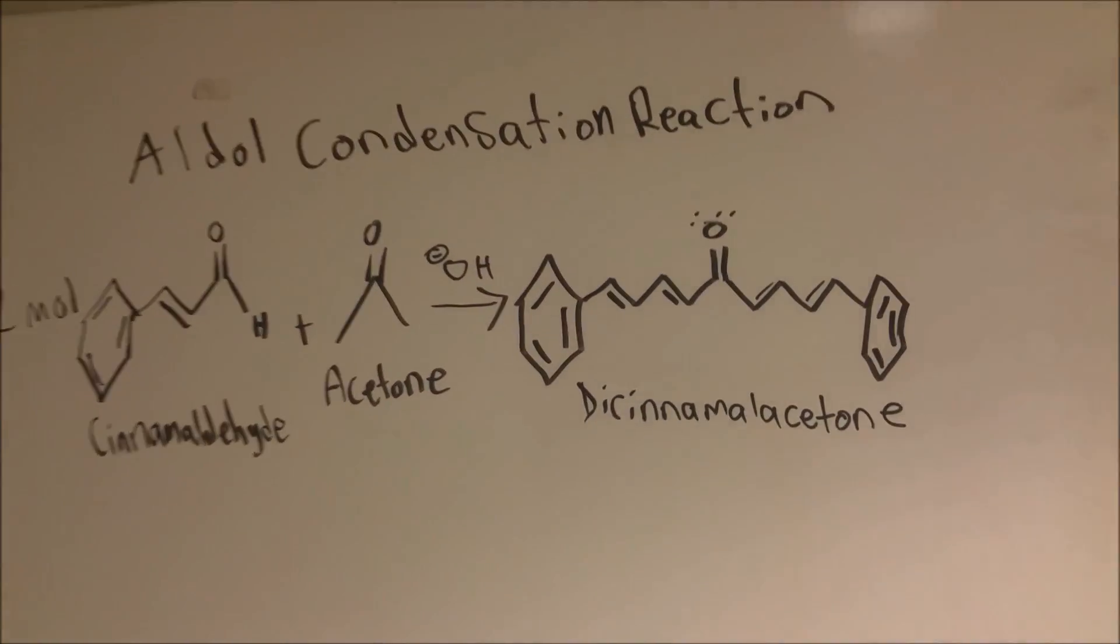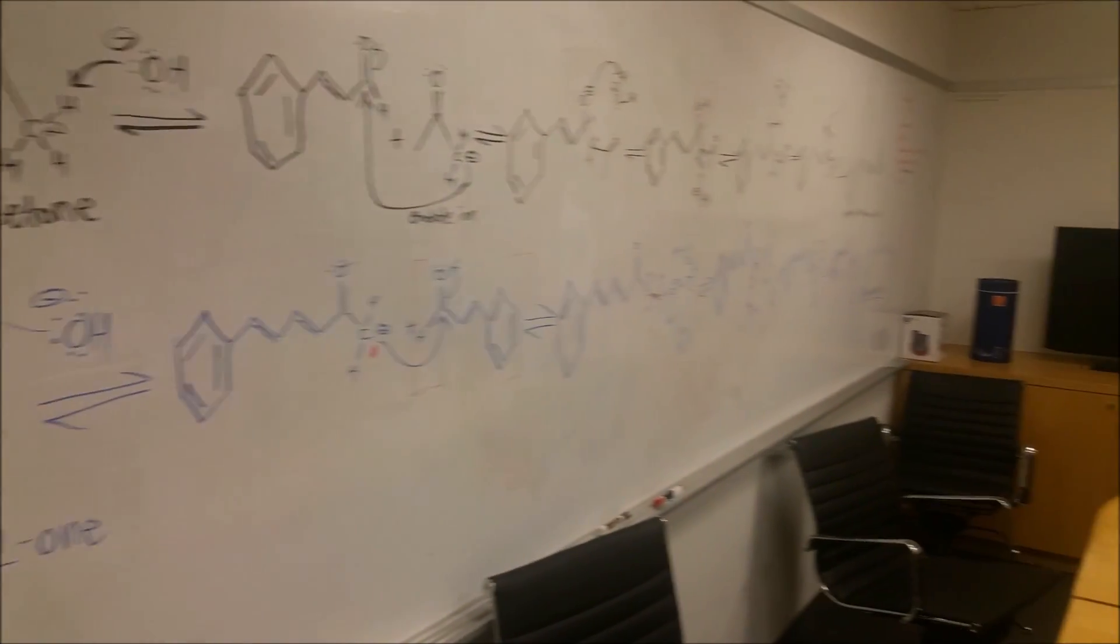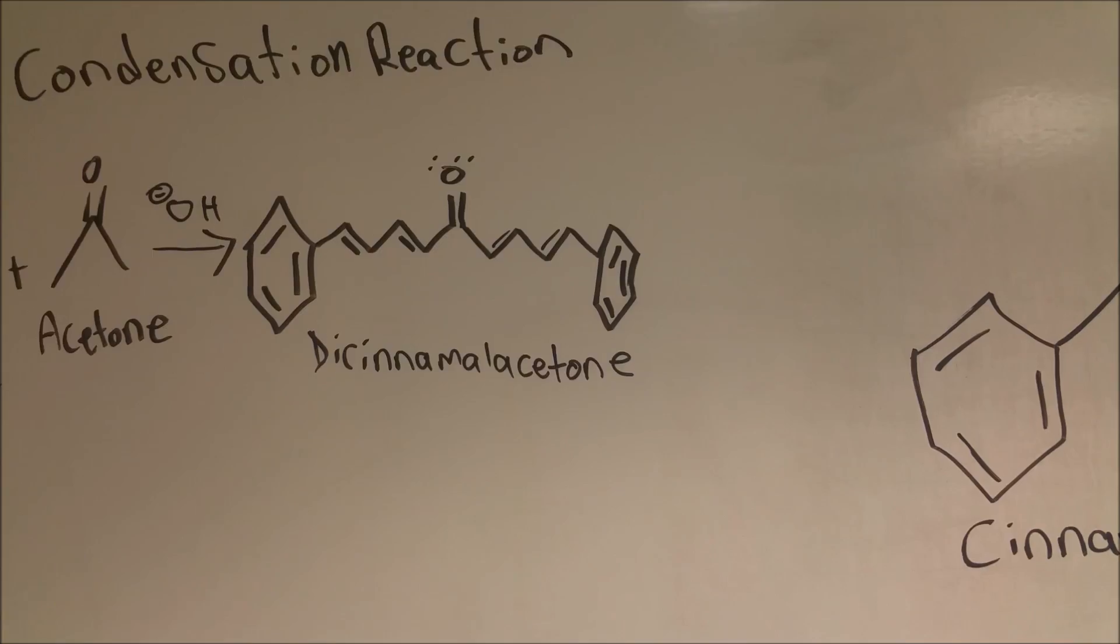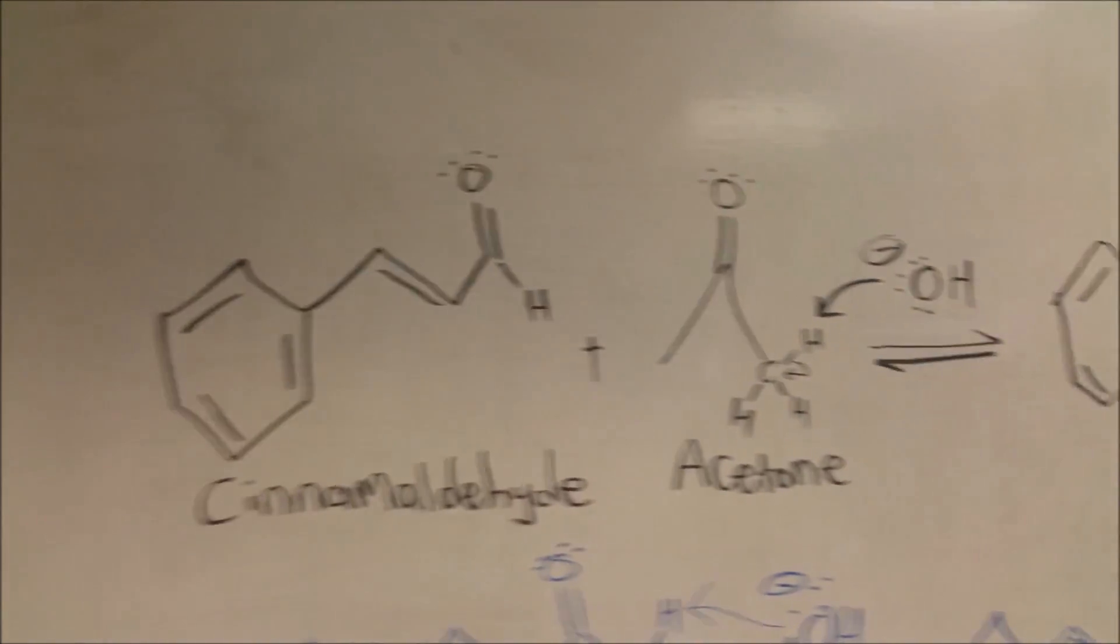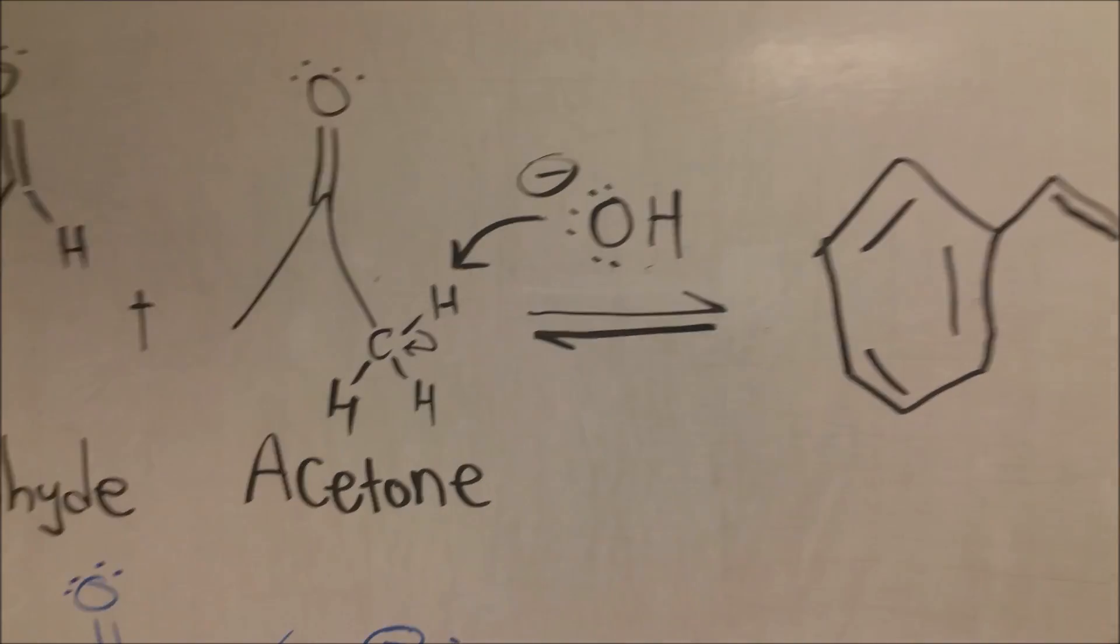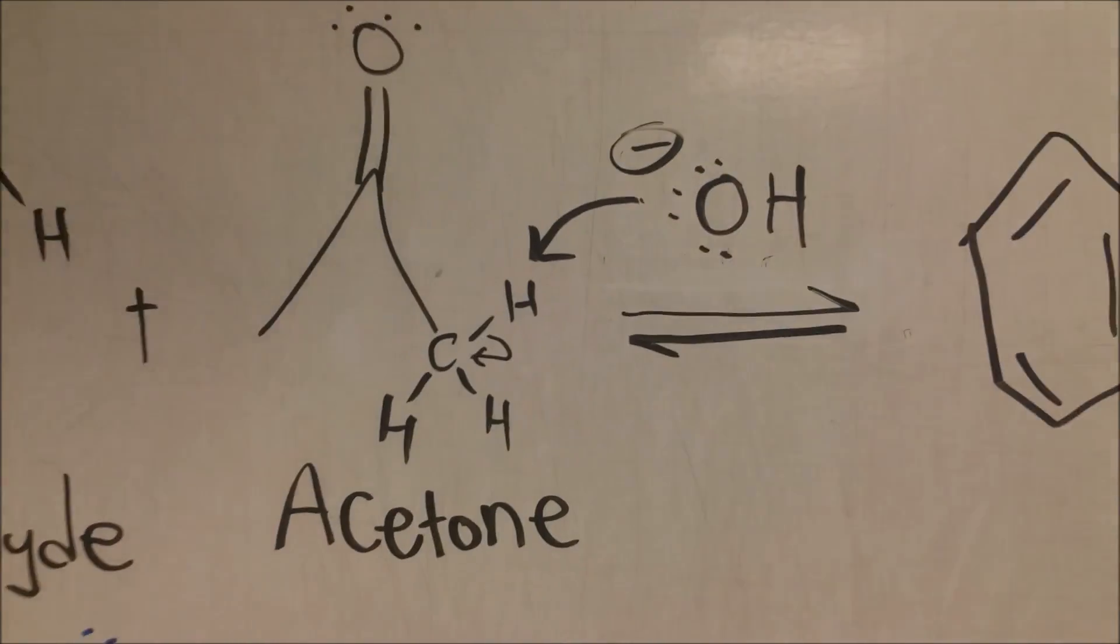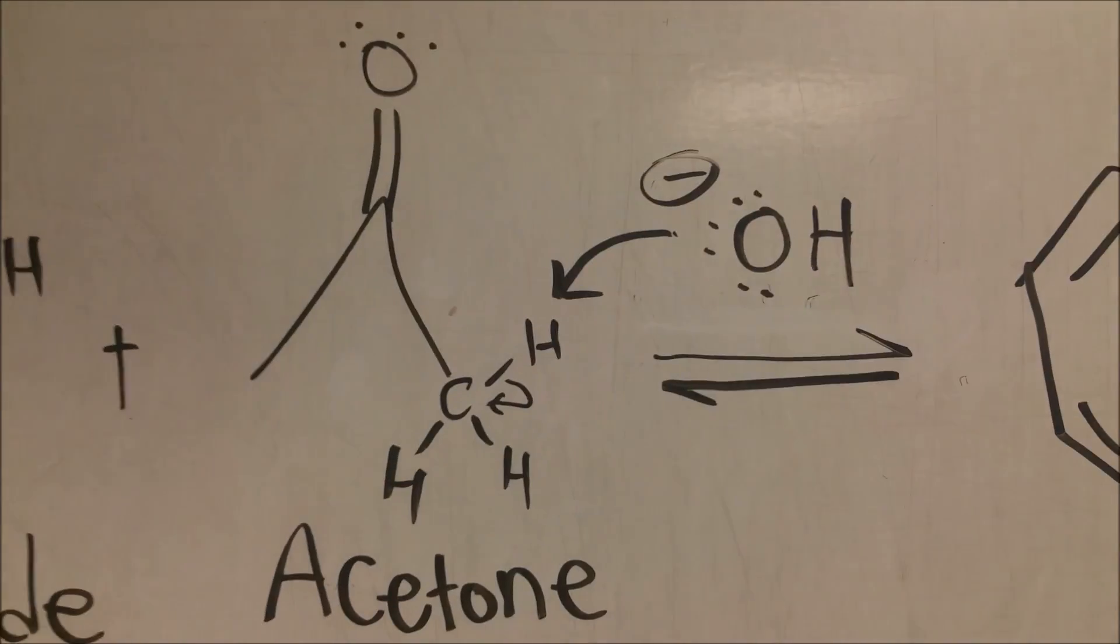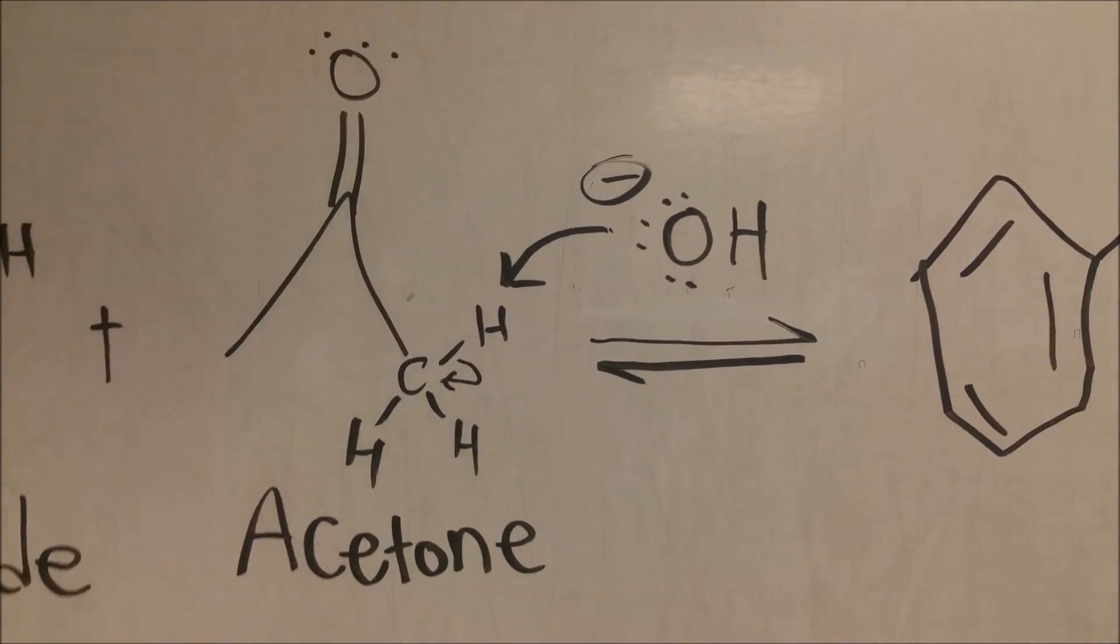I have 2 equations here. The black one forms the first half and the blue one on the bottom forms that other half. So to start the reaction, first step, the hydroxide catalyst in solution will take a hydrogen away from the carbon in the acetone molecule.